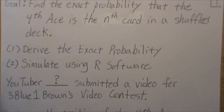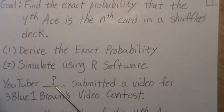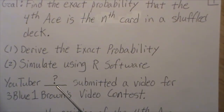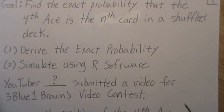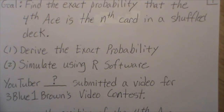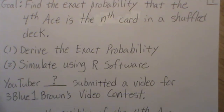Now, this video was kind of spurred on by a YouTuber — I put a question mark here, and I'll tell you why in a second. They submitted a video for 3Blue1Brown's video contest, and they submitted it on paradoxes. One of the paradoxes is: when you have a shuffled deck and you have one guess of where the fourth ace might be, where would you guess? It turns out that the last card has the highest probability of being that fourth ace. In that video, they gave a great heuristic argument — they didn't calculate it exactly — of why you should choose that last card.